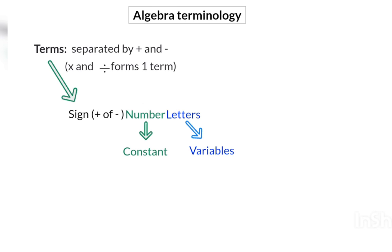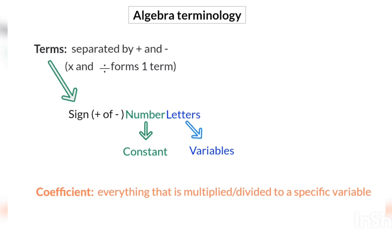Another new word that we are going to use is the word coefficient. A coefficient consists of everything that is multiplied or divided to a specific variable. For example, if we look at a term like minus 7x squared, and I ask you what is the coefficient of x squared, it will be the sign, the minus, and the 7 that is multiplied to x squared.